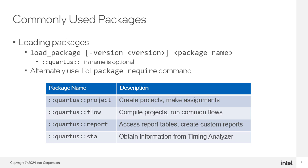The syntax is load_package, followed by an optional version number, and then the package name. Using the Quartus scoping name is optional when you use the load_package command. You can also use the Tickle command package require to load any of the packages, but the Quartus load_package command makes it easy to load and unload different versions of the Intel Quartus Prime software packages.